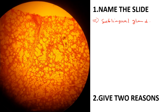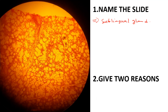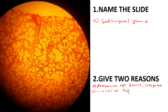The next question is: give two reasons for your answer. The first reason is the presence of dense irregular connective tissue. The second reason is the presence of adipose tissue or adipocytes, which are just fat cells.